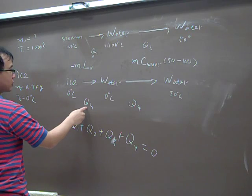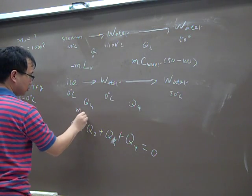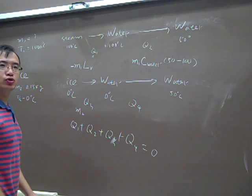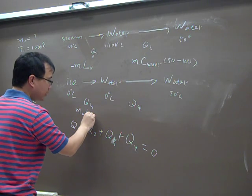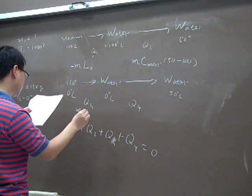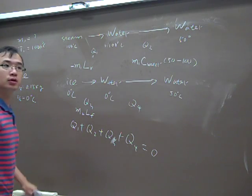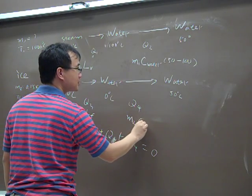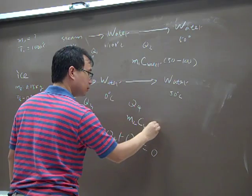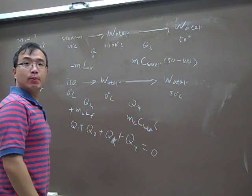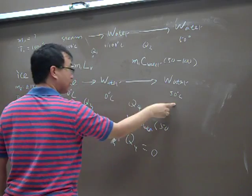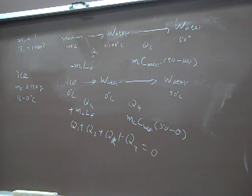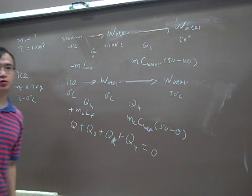Similarly here, how do you get Q3? That's M2 multiplied by, this is from ice to water, so it should be latent heat of fusion, right? And it's positive. And here, Q4 should be M2 multiplied by C water, multiplied by the temperature change, which is 50 final subtracting initial, minus zero. So you can see if you put all these things into the equation, because you have only one unknown, M1, so you can solve for that.